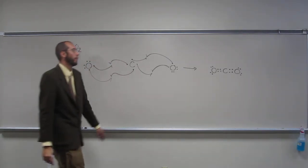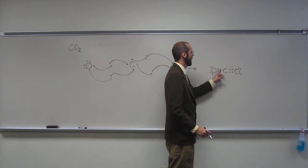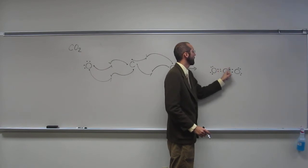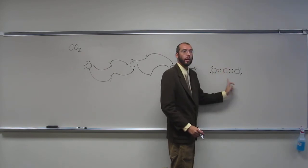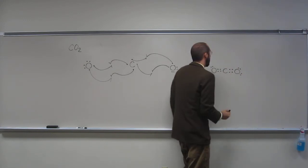Now, I know it looks very strange, right? But you can see, one, two, three, four, five, six, seven, eight around oxygen. One, two, three, four, five, six, seven, eight around carbon. One, two, three, four, five, six, seven, eight around oxygen.